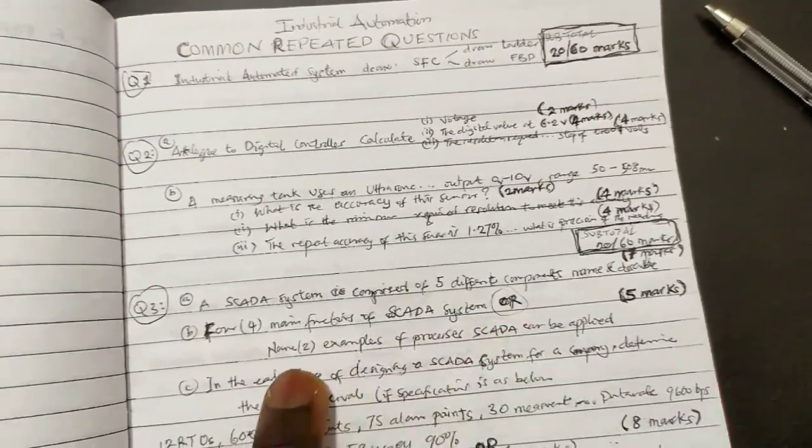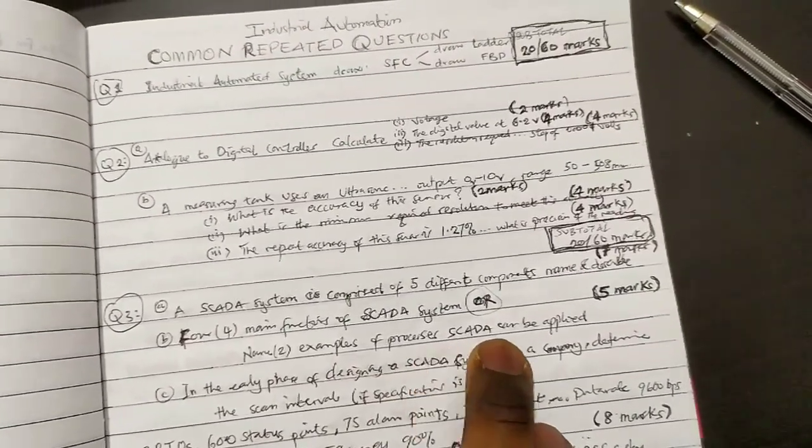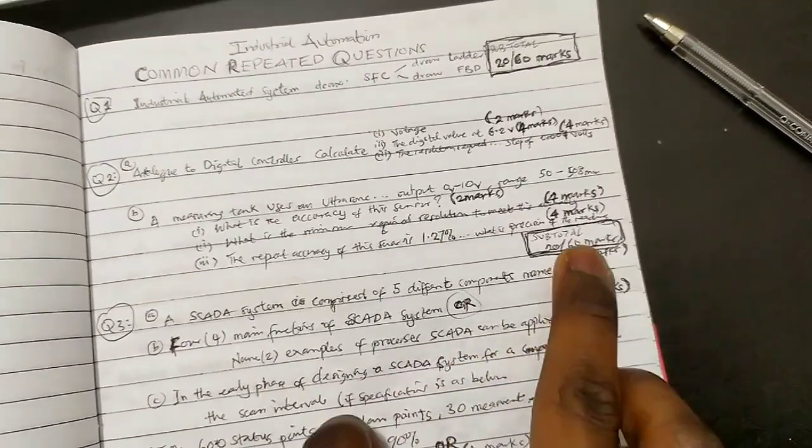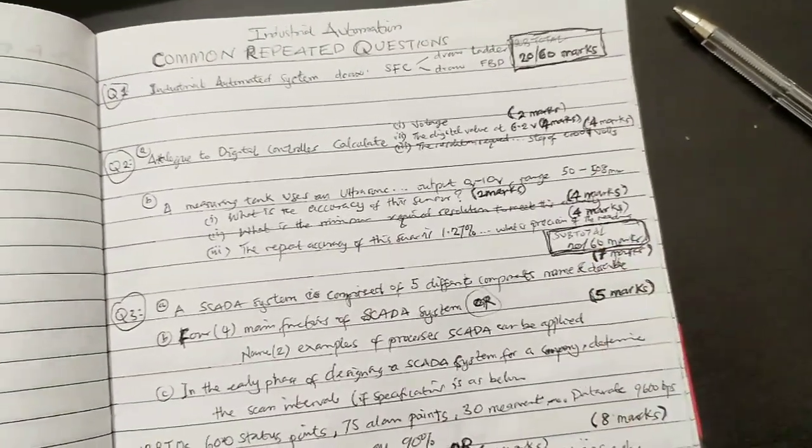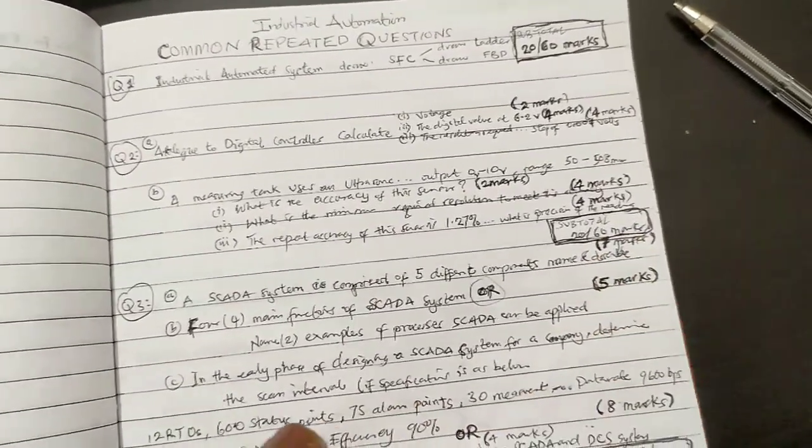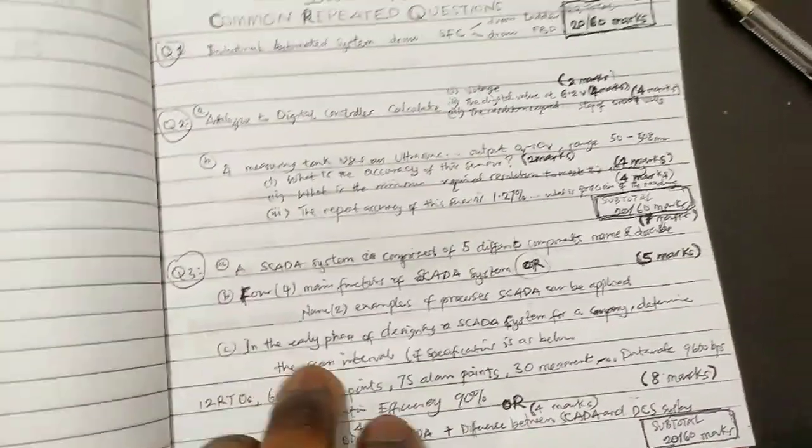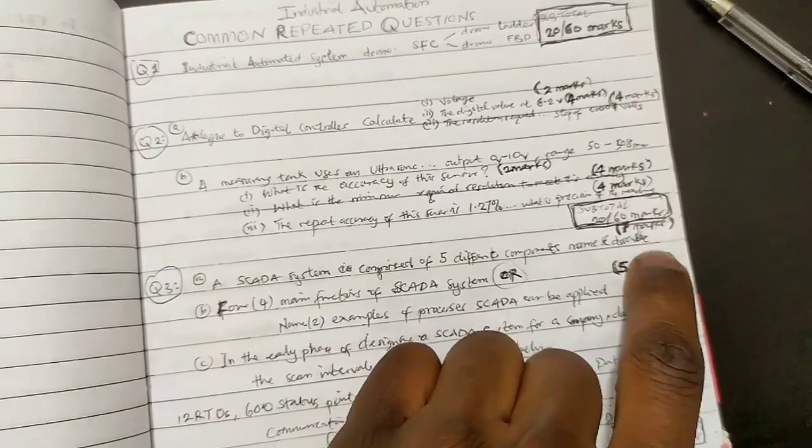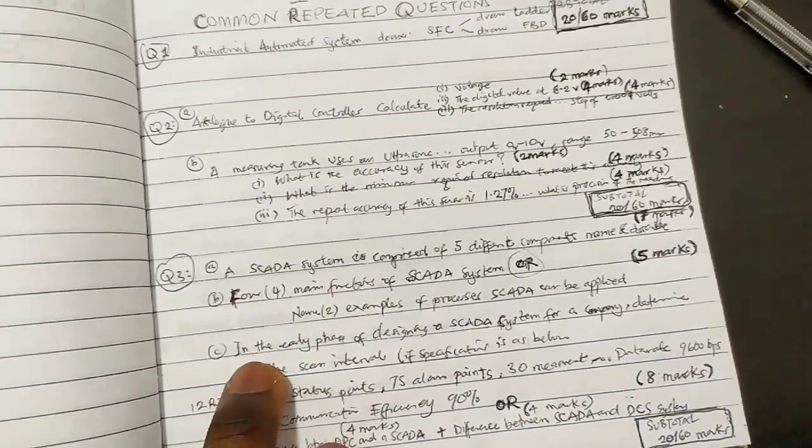What are the five different components? Name the four main functions of a SCADA system. Name two examples of processes SCADA can be applied to. I have a fairly different opinion about the marking description now than when I was analyzing earlier.